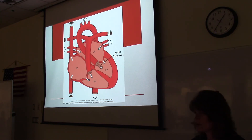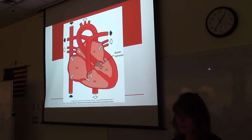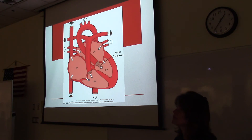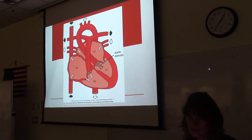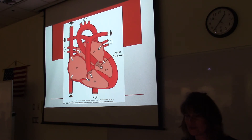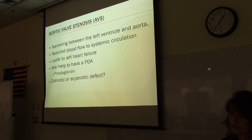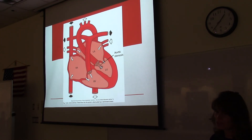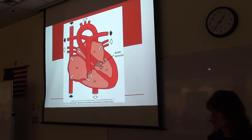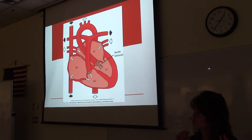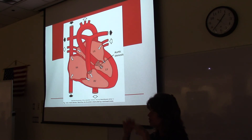A PDA may help in aortic valve stenosis. With the valve narrowed, pressures back up into the pulmonary circulation. The pathway of least resistance becomes from the pulmonary artery through the ductus arteriosus into the lower-pressure aorta. So blood from that high-pressure pulmonary circulation will push through the ductus arteriosus. Is that cyanotic or acyanotic? Cyanotic — because blood is going from the high-pressure pulmonary circulation through the ductus into the aorta without first going to the lungs to pick up oxygen.